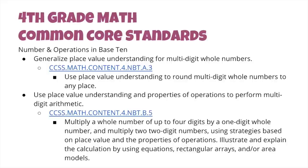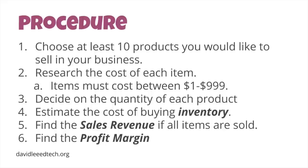The unit's skills and understandings incorporated the fourth grade Common Core Mathematics Standards, Number and Operations in Base 10, A.3 and B.5. Students began by choosing 10 products they wanted to sell in their business, researched their prices online, and then chose the price for each product between $1 to $999.